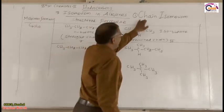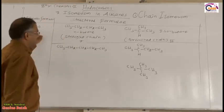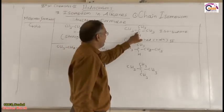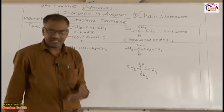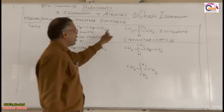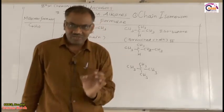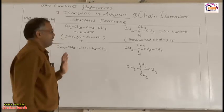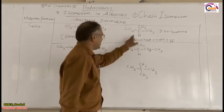So what is meant by chain isomerism? Two or more compounds having the same molecular formula — both structures have C4H10 — but their nature of the chain of carbon atoms is different, or the carbon skeleton is different, are known as chain isomers, and the phenomenon is known as chain isomerism. This is the first chain isomer and this is the second chain isomer.